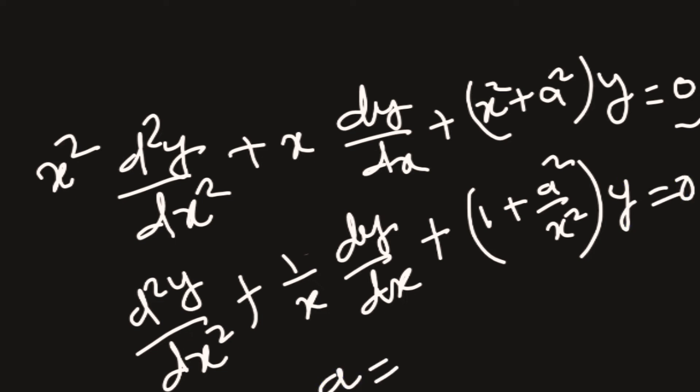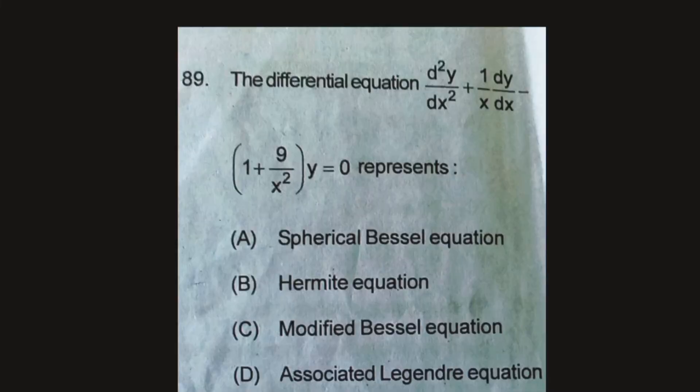Here, a is equal to 3. So, this is basically a Bessel equation and we can write it as modified Bessel equation as the x, y coordinates are rectangular coordinates. Spherical Bessel equation is not the correct answer. Answer is modified Bessel equation.